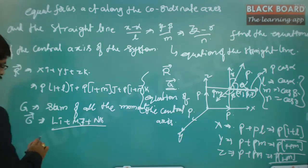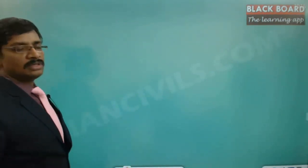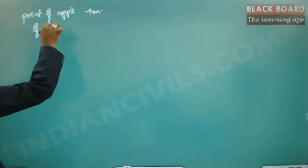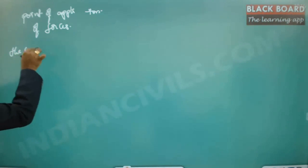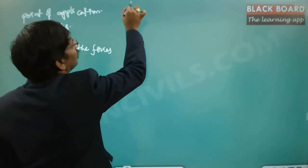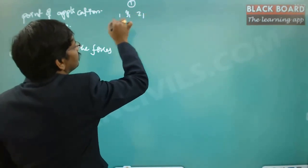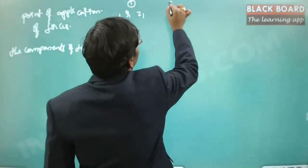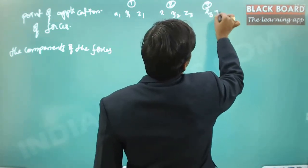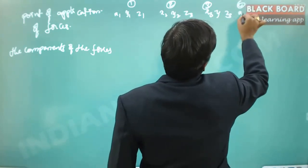To find L, M, N there is a standard procedure. First, note down the point of application of each force, and then identify the force components. For force 1: point of application (x₁, y₁, z₁); for force 2: (x₂, y₂, z₂); for force 3: (x₃, y₃, z₃); for force 4: (x₄, y₄, z₄). The first three forces act from the origin so their points of application are (0, 0, 0), but the fourth force has point of application (α, β, γ).